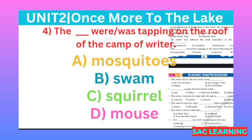Number four: What was tapping on the roof of the camp of the writer? (Musnif ke camp ki chhat par kaun halki si thapkiyan de raha tha?) Option A: mosquito, B: swam, C: squirrel, D: mouse. Correct option is A, squirrel.